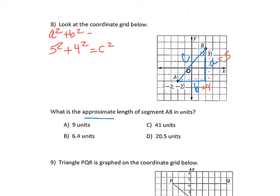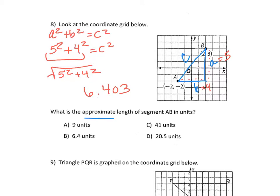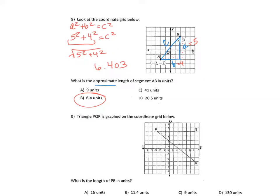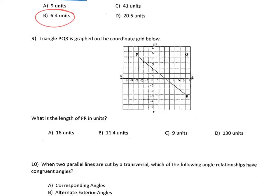So five squared plus four squared equals C squared — there's that formula again. Five squared plus four squared, then we take the square root, and we get 6.403, so 6.4 would be the rounded answer.